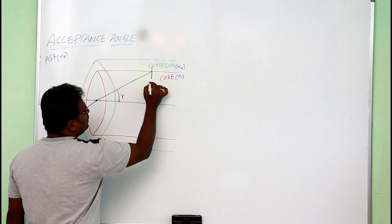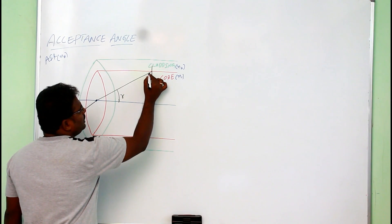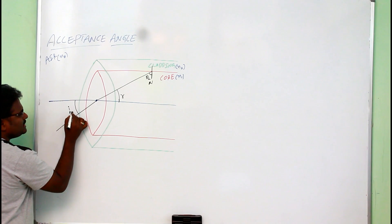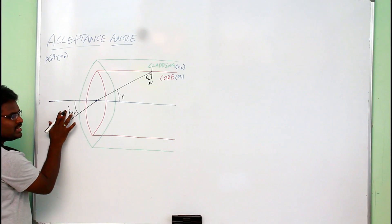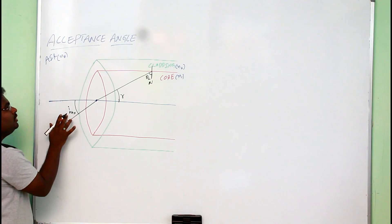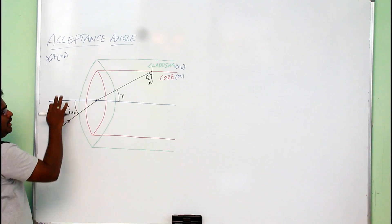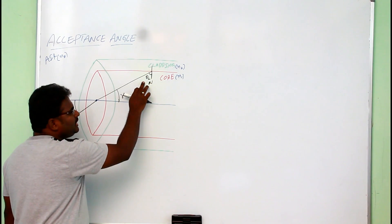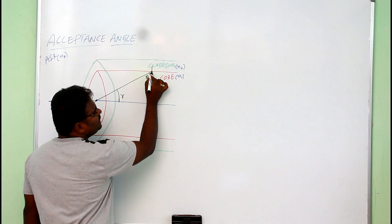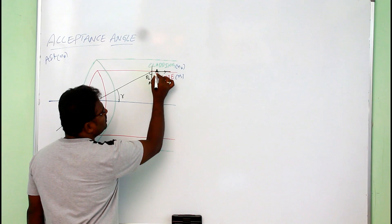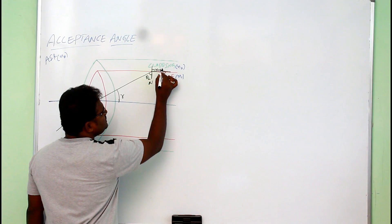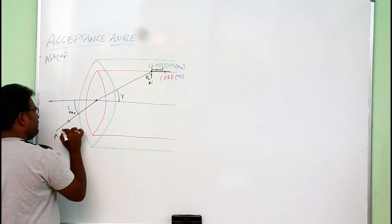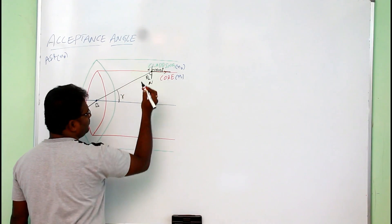At the core-cladding junction, let us say the angle of refraction is R. This is the normal for both core and cladding. At this position, if we have a critical angle, then call this angle of incidence launched from one end as i_maximum — this is called the acceptance angle. At i_maximum, you can have a critical angle at the core-cladding junction. If you have a critical angle there, the angle of refraction will become 90 degrees. Call this light ray A-B and call this position as point C.